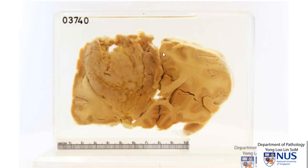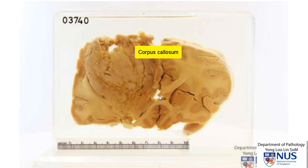Hello. Here is a coronal section of the brain and we can see two cerebral hemispheres. This is part of the corpus callosum, so this would be the region of the lateral ventricles.